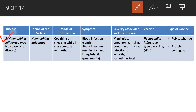Haemophilus influenzae type B (Hib) disease is caused by the bacterium Haemophilus influenzae. Mode of transmission is through the air by coughing or sneezing while in close contact with others. Despite the name, Haemophilus influenzae does not cause influenza or flu — influenza is a viral infection.